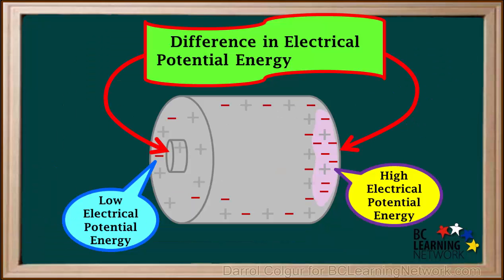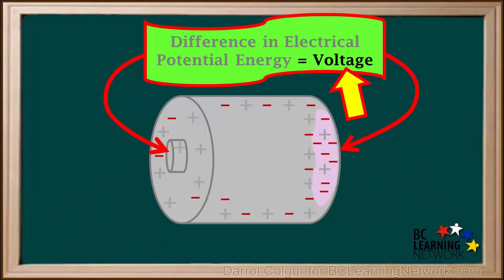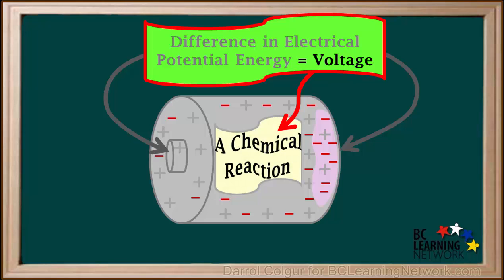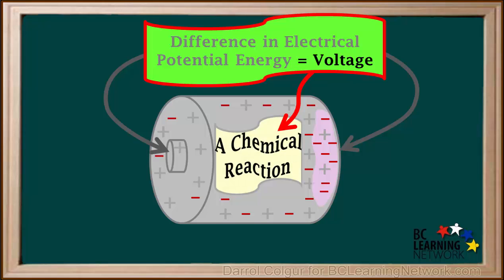So there is a difference in potential energy between the two ends of the cell. This difference in potential energy is known as the voltage of the cell. The voltage of a chemical cell depends on the type of chemical reaction taking place inside the cell. Different types of chemical cells have different voltages, but a common voltage found in many cells is 1.5 volts.